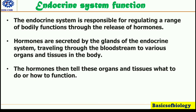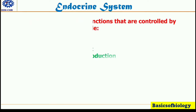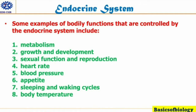The endocrine system is responsible for regulating a range of bodily functions through the release of hormones. Hormones are secreted by the glands of the endocrine system, traveling through the bloodstream to various organs and tissues in the body. The hormones then tell these organs and tissues what to do or how to function. Some examples of bodily functions controlled by the endocrine system include metabolism, growth and development, sexual function and reproduction, heart rate, blood pressure, appetite, sleeping and waking cycles, and body temperature.